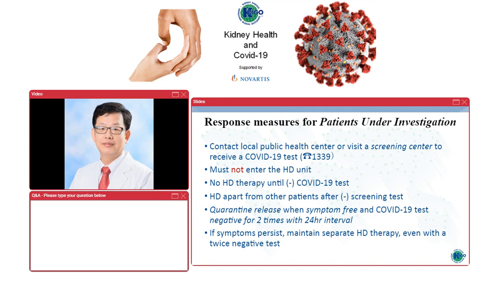For patients under investigation, the healthcare worker or patient should contact the local public health center or visit a screening center to receive a screening test for COVID-19. The patient should not enter the hemodialysis unit, and hemodialysis therapy should not be done until the screening tests are negative. Hemodialysis should be performed apart from other patients after a negative screening test. Quarantine release is recommended when the patient is symptom-free and COVID-19 tests are negative twice within a 24-hour interval. If symptoms persist, they should remain on separate hemodialysis even with a twice-negative test.